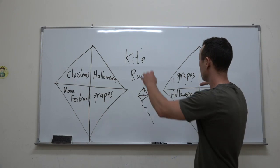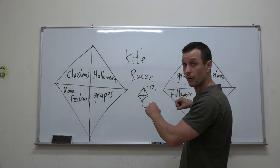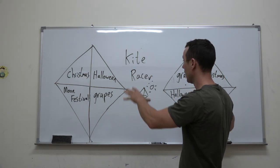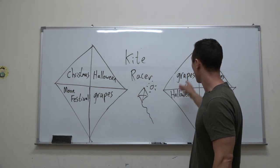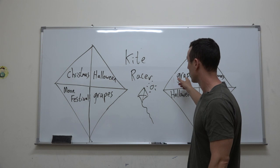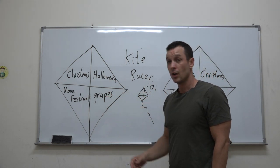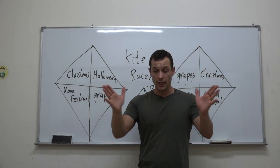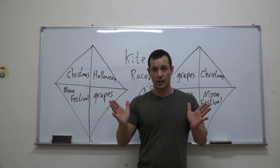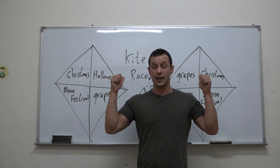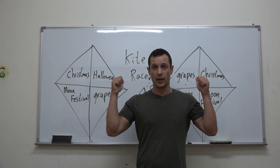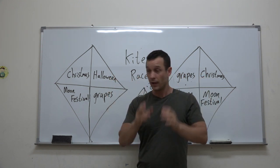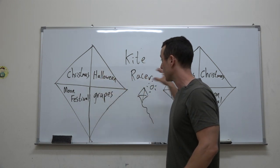So I have Christmas, Moon Festival, and Halloween. I have both sets of words on each kite, and then I throw in a random word — grapes. What you're going to do is two kids come to the front of the class.